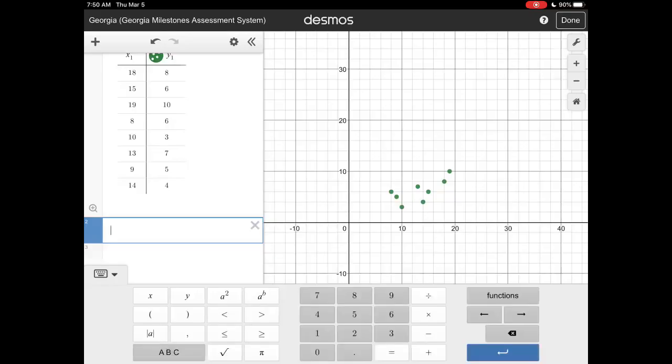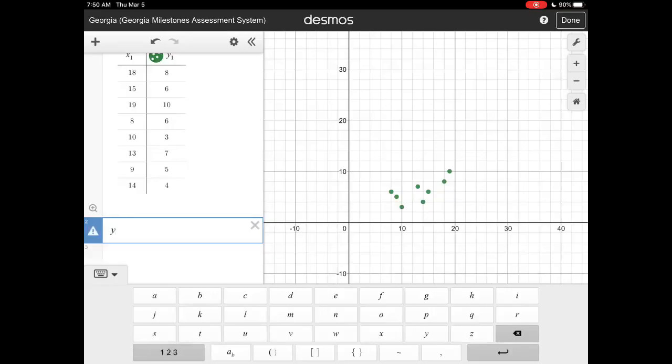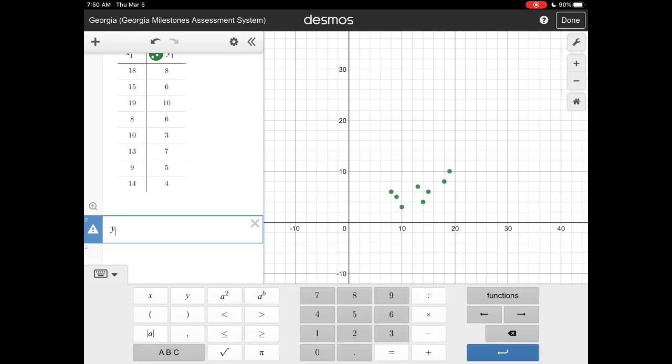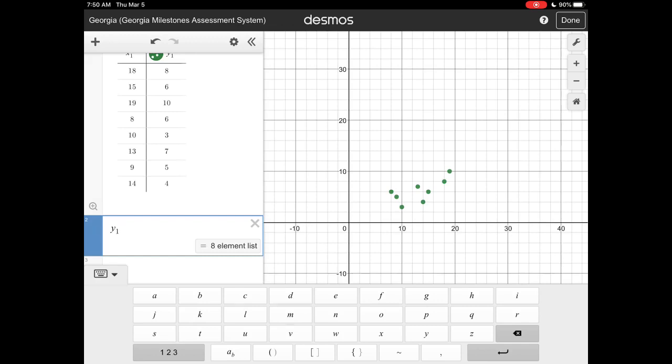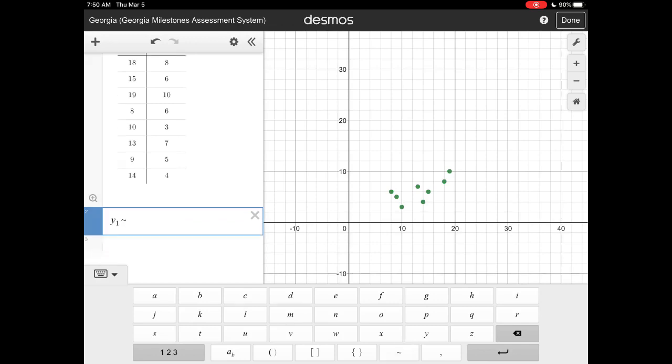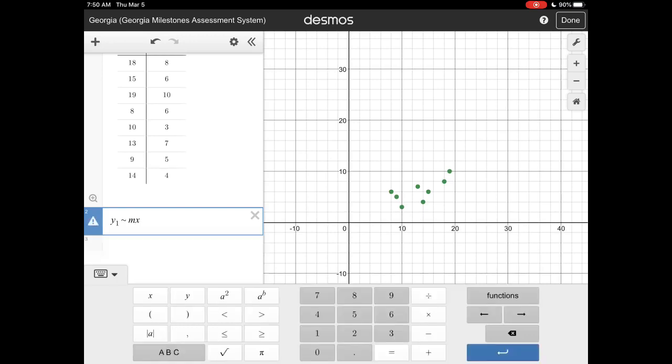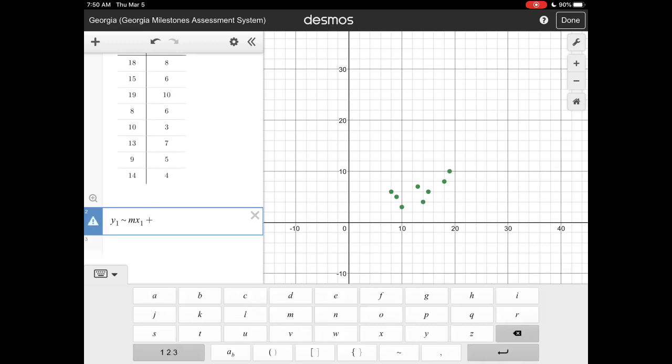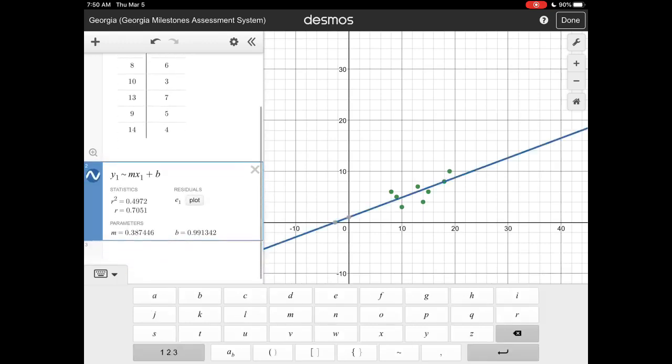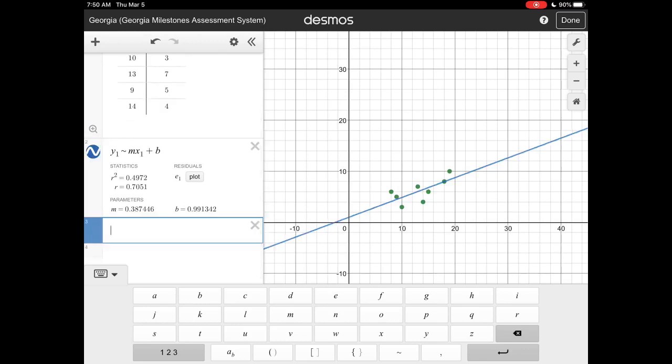We're going to hit Y1 so we need to hit the little subscript 1, get out of the subscript, we need a little curvy thing, it's right down here at the bottom, and then mX1 plus B. And notice it gives us my m and my B. So my slope is 0.387 and my y-intercept is about 1.